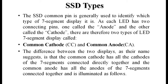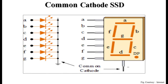In a common cathode SSD, all seven segments have LEDs whose cathodes (negative electrodes) are connected together and grounded. VCC is supplied to separate anode pins for each segment — a, b, c, d, e, f, g — to light individual segments. The ground electrode is the common cathode electrode.